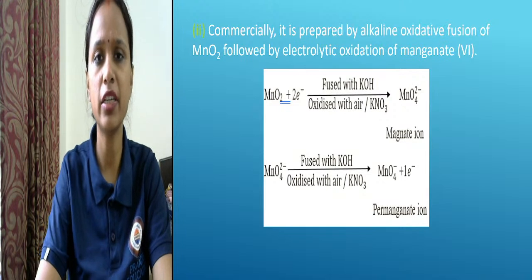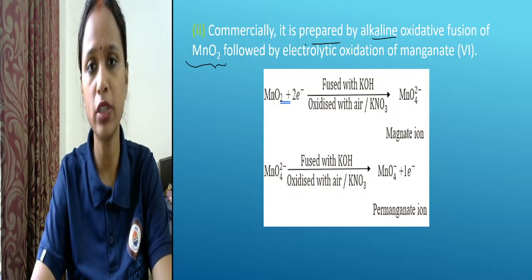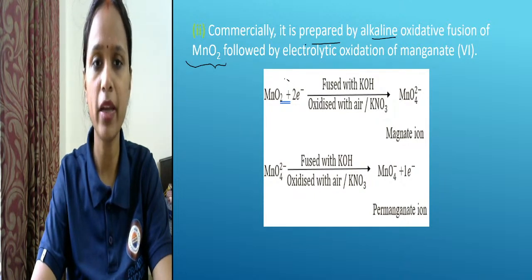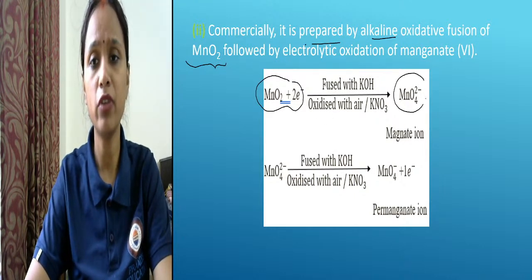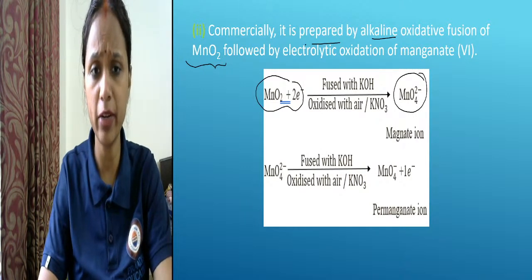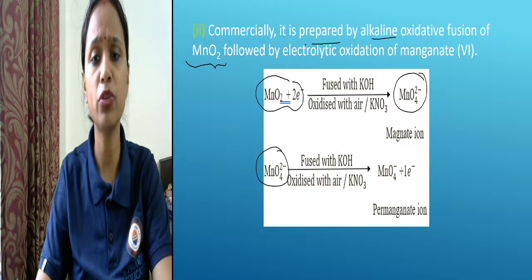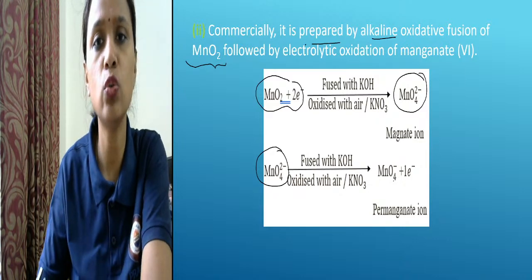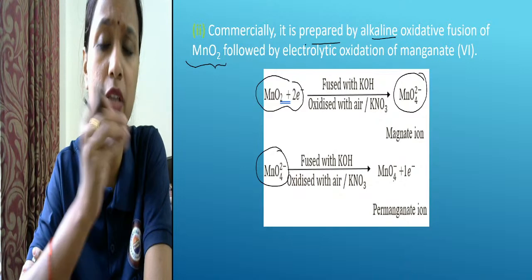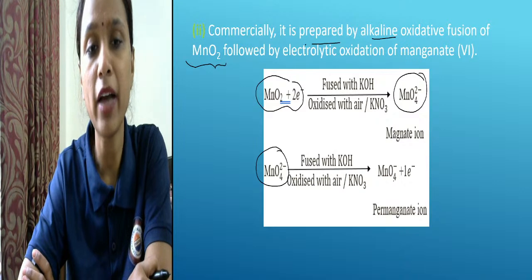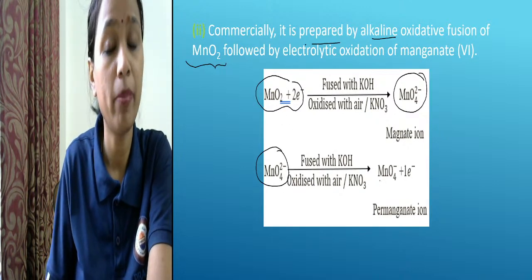Commercially, potassium permanganate is prepared by alkaline oxidative fusion of pyrolusite ore, followed by electrolytic oxidation of manganate. Here, pyrolusite ore and KOH with excess of air convert to potassium manganate. Then fusing with KOH and excess of air gives a method to form potassium permanganate. The previous method had many solid-form products, but the electrolytic oxidation method cleanly converts potassium manganate to potassium permanganate.